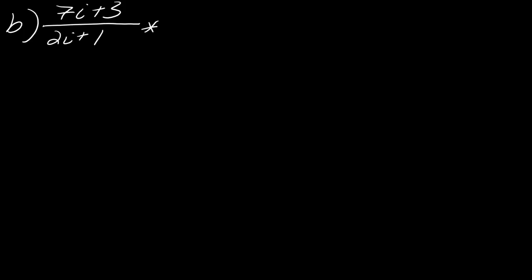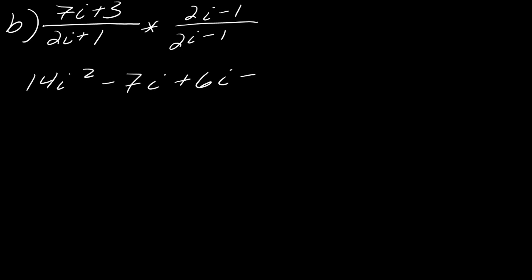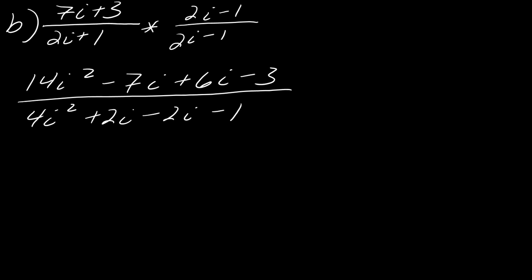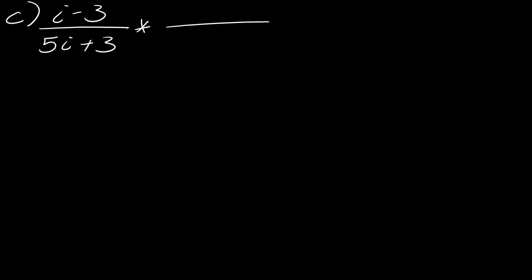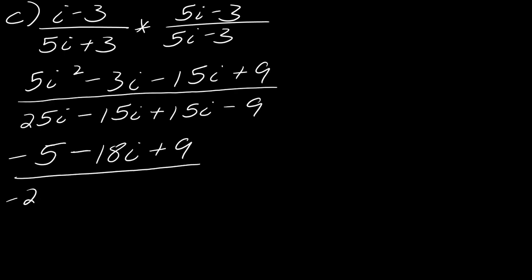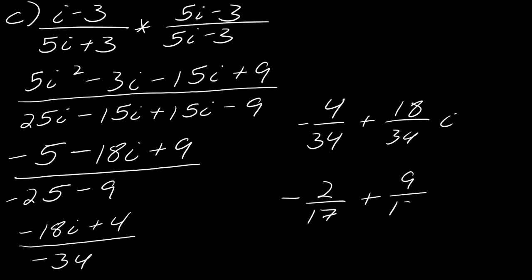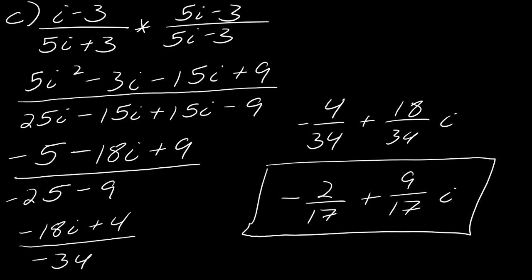Moving on to the next one: to multiply by the conjugate, that would be 2i minus 1 on top and on bottom. This gives 14i squared minus 7i plus 6i minus 3 on top, and 4i squared plus 2i minus 2i minus 1 on the bottom. I'll show you all the steps to simplify. For the last one, the conjugate is 5i minus 3, and I'll show you all the steps to finish this off — and notice with this one you can simplify it a little bit further.